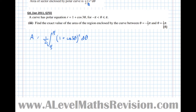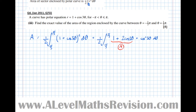We need to multiply out the bracket to integrate, so this equals one half times the integral from minus pi over three to pi over three of one plus two cos of three theta plus cos squared of three theta d theta. It's sensible to break this into two parts: part A, which is easy to integrate, covers one plus two cos of three theta, and part B covers cos squared of three theta, which is slightly harder.